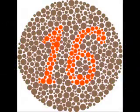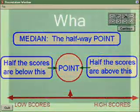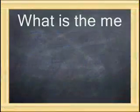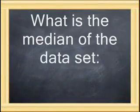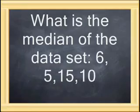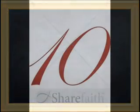Now on to the median. The median is the middle number when the data is listed in order from smallest to largest. So what would be the median of this data set? You're right — it would be 10.